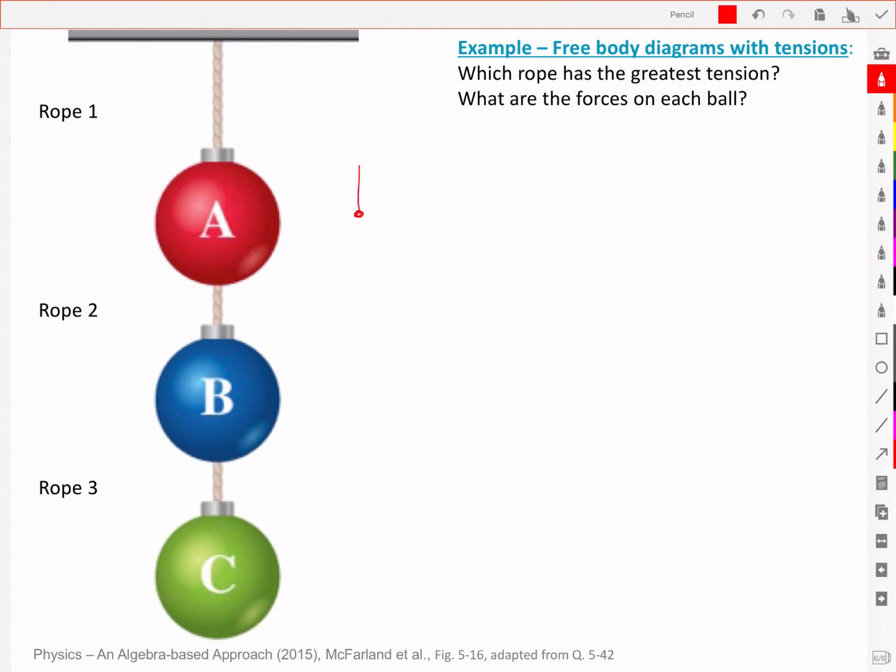For bauble A, I've got an upward tension due to the rope from above, a downward tension from the rope below, and the force of gravity on that bauble A. Those are the only three forces acting on that object, on that bauble A.